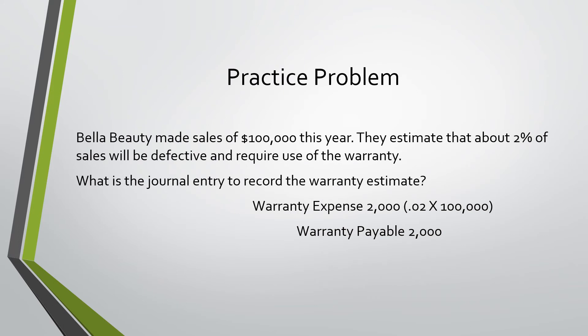In this practice problem, Bella Beauty made sales of $100,000 this year. They estimate that about 2% of sales will be defective and require use of the warranty. The journal entry to record the warranty estimate would be a debit to Warranty Expense for $2,000 — calculated as 2% times sales revenue — and a credit to Warranty Payable for $2,000.